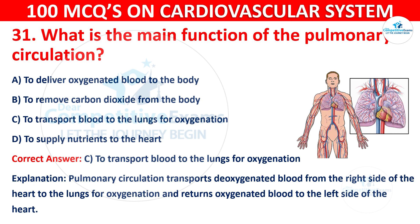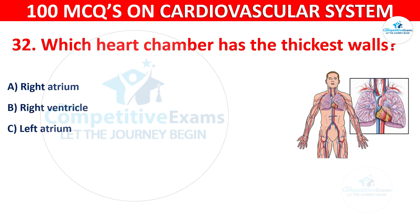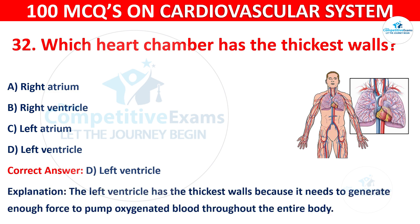Question 32: Which heart chamber has the thickest walls? Options are: Right atrium, Right ventricle, Left atrium, or Left ventricle. The correct answer is D, Left ventricle. The left ventricle has the thickest walls because it needs to generate enough force to pump oxygenated blood throughout the entire body.